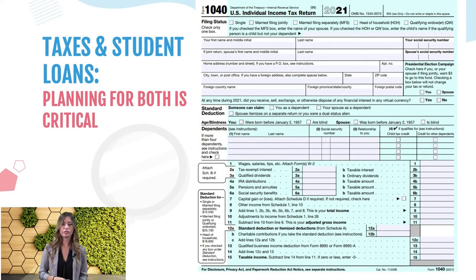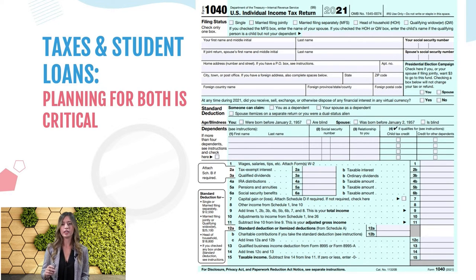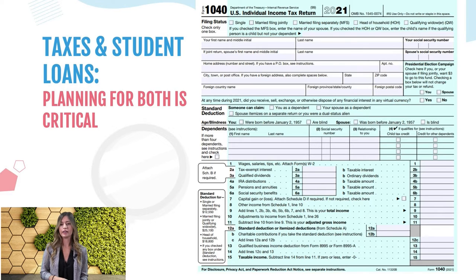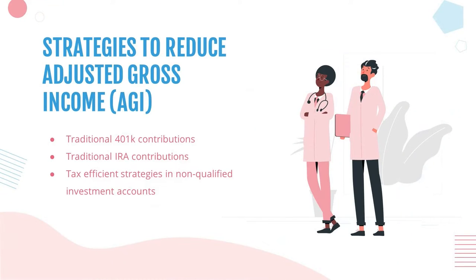Now, going to everyone's two favorite things: taxes and student loans. On line 11 — your adjusted gross income — this is the item they look at when calculating your student loan payment. It's important because wages, capital gains, and any income sources all add to your adjusted gross income. So the question is: are there ways to lower your adjusted gross income to both reduce your monthly student loan payment and lower your tax bill at the end of the year?